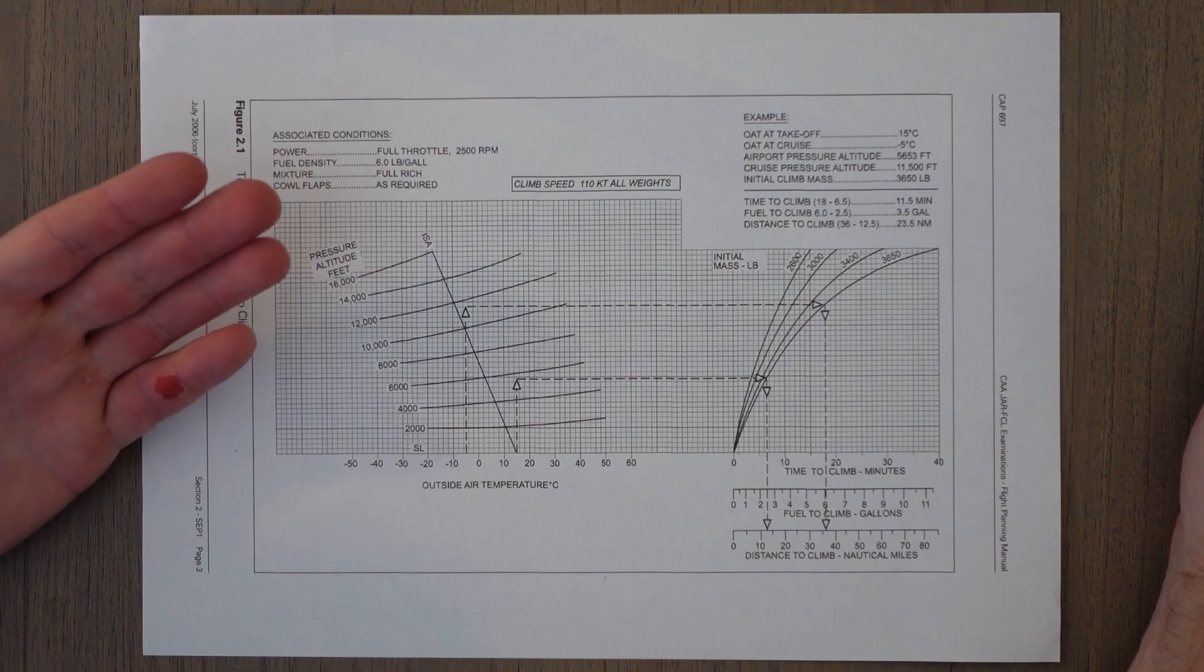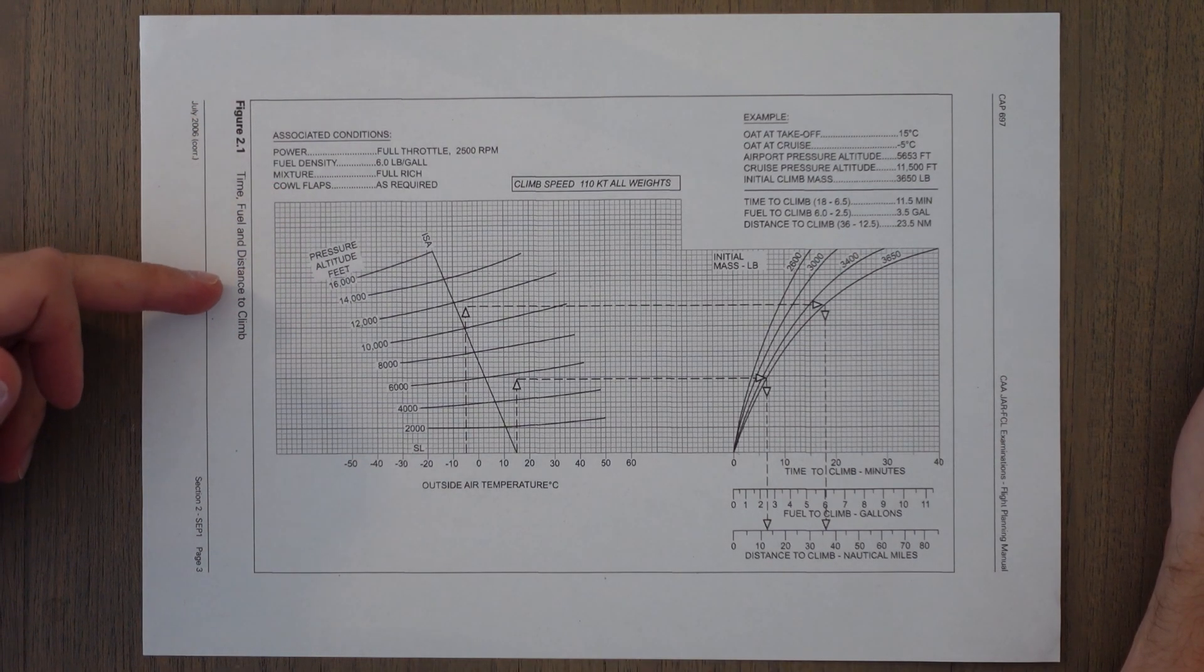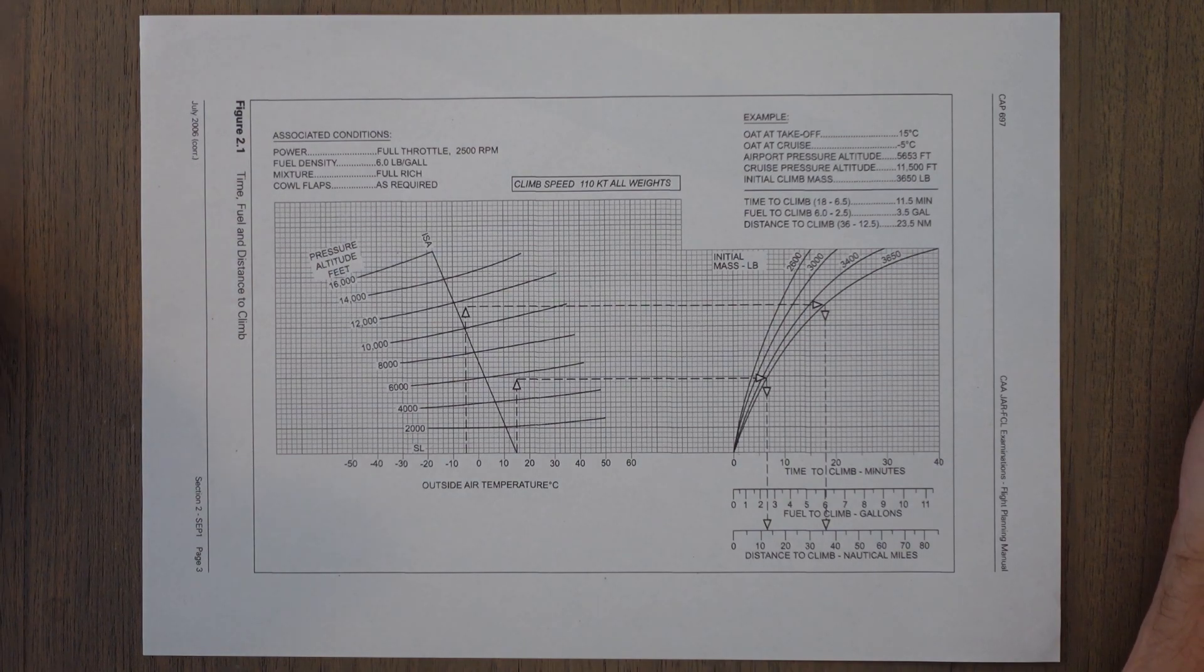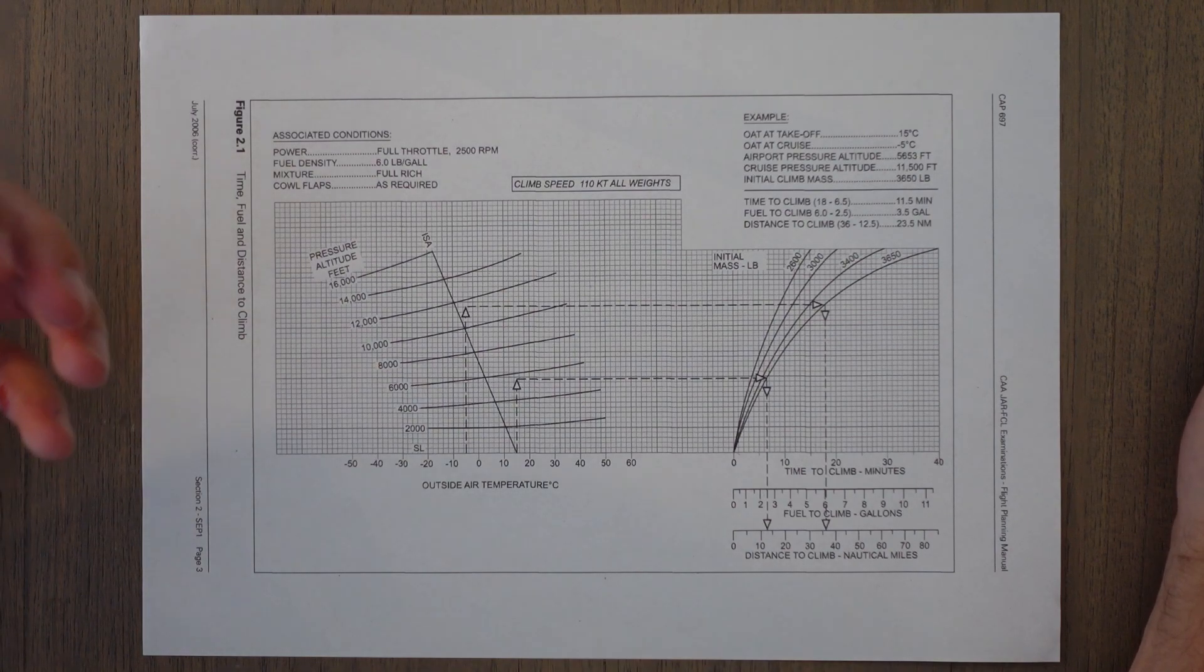If we then look at the graph, it's 2.1 time, fuel, and distance to climb—that's the one we need. Luckily for us, when we look at these graphs there's always an example which will give us some clues about what to do.